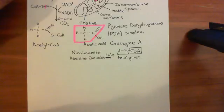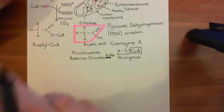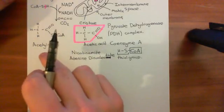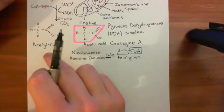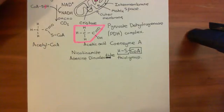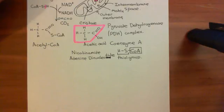We now want to see what we're going to do with acetyl coenzyme A molecules, which are within the matrix of the mitochondria. They are going to enter what is known as the citric acid cycle.